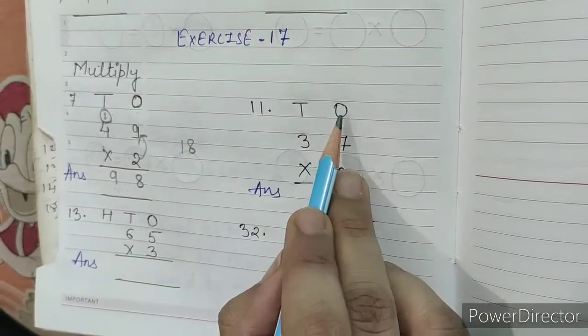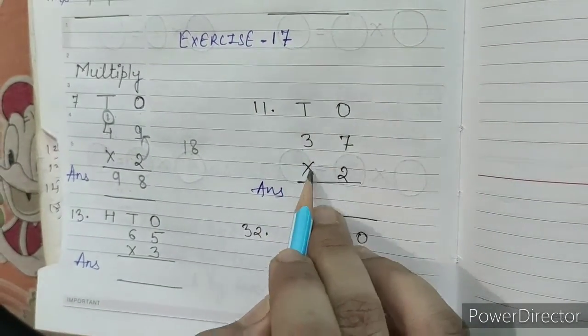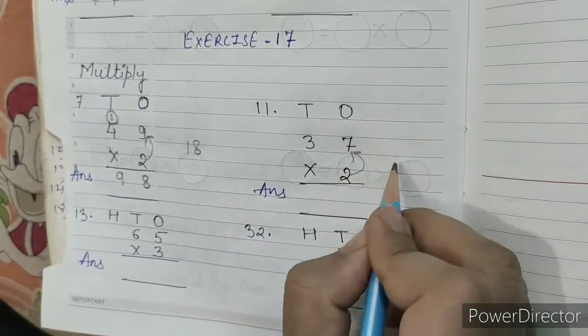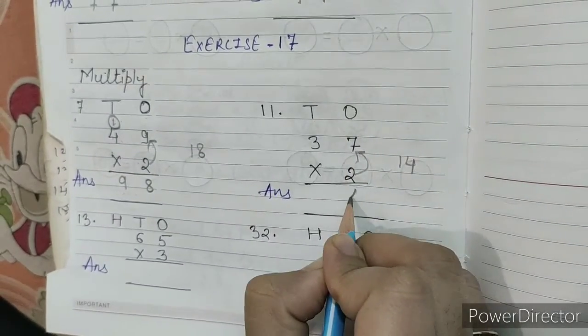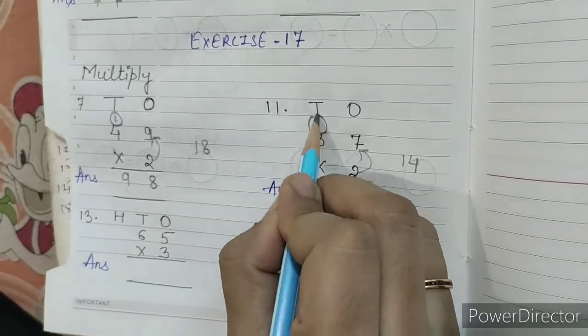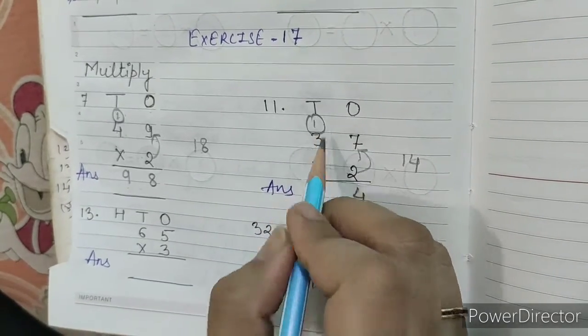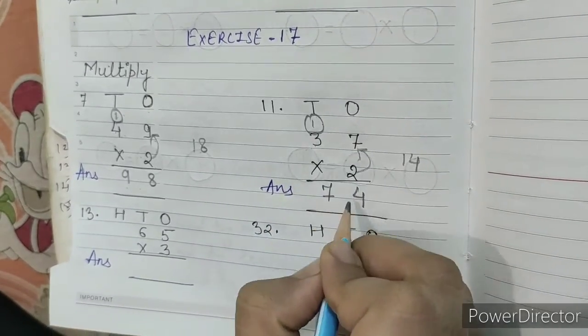Question number 11, ones, tens. 37 into 2. 2, 7s are 14. 1, 4, 14. We will write 4. Carry over 1. 2, 3s are 6. 6 plus 1, 7. Our answer is 74.